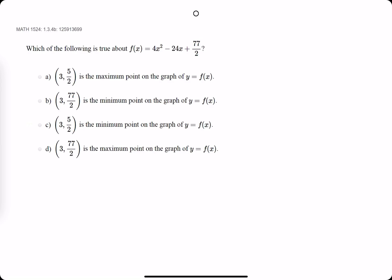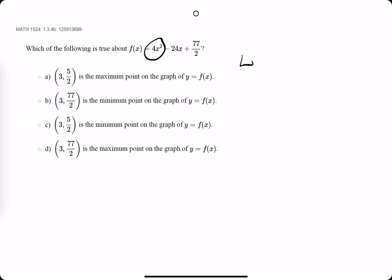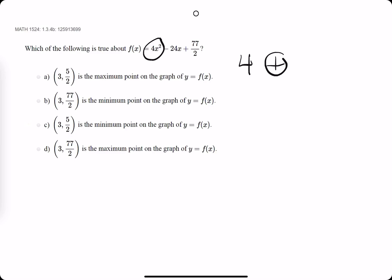First thing we look at is the x² term, and we ask ourselves whether or not it's positive or negative. In this case, it's a positive 4, which means the curve should be opening up, which indicates that this curve could not have a max value, but instead we know it will have a minimum value.